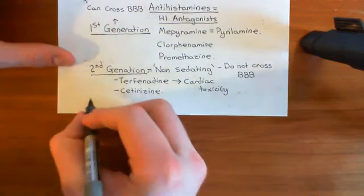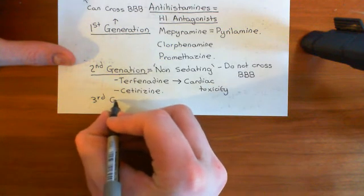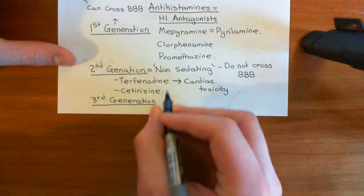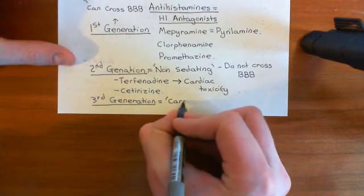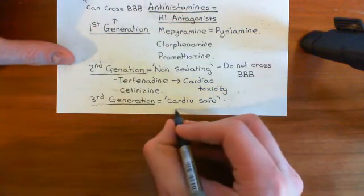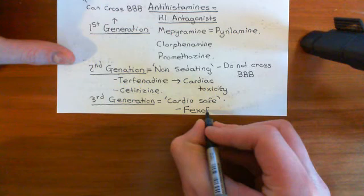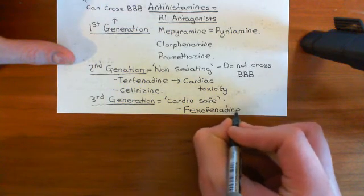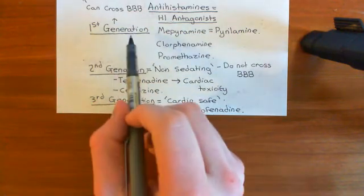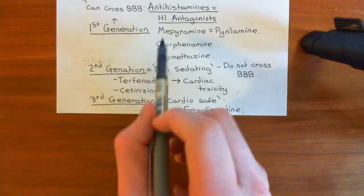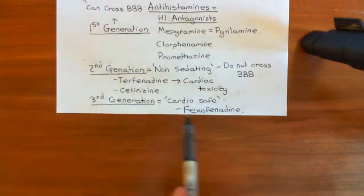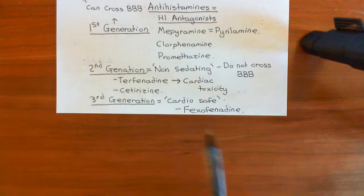So now we also have third generation antihistamines, which are based on the second generation antihistamines but are cardio-safe antihistamines. The archetype example of a third generation antihistamine would be the drug fexofenadine. All of these drugs are competitive antagonists for the H1 receptor, so they specifically block the H1 receptor. The first generation ones were less good at selectivity and would interact with some other receptors, particularly H3 when they crossed the blood-brain barrier. But fexofenadine, for instance, is extremely H1 selective.